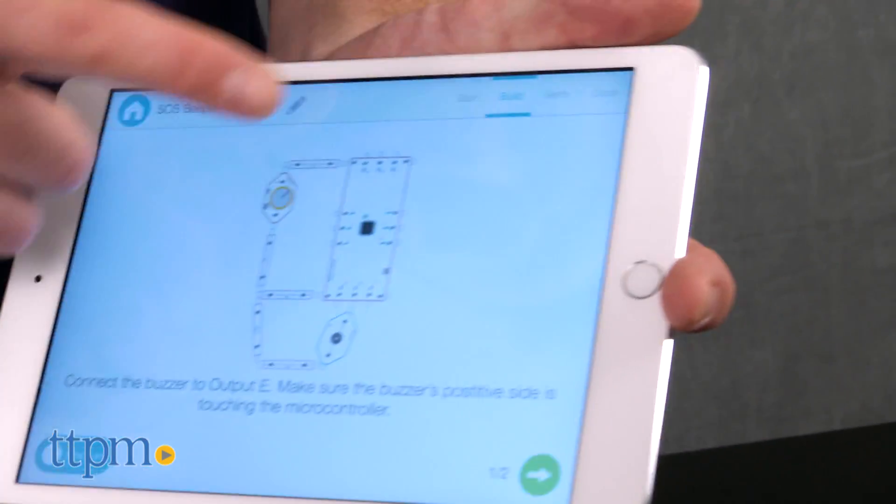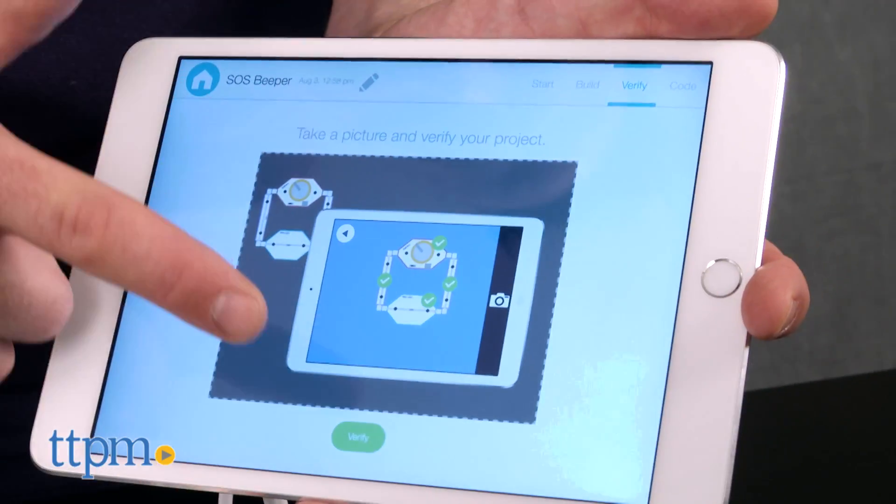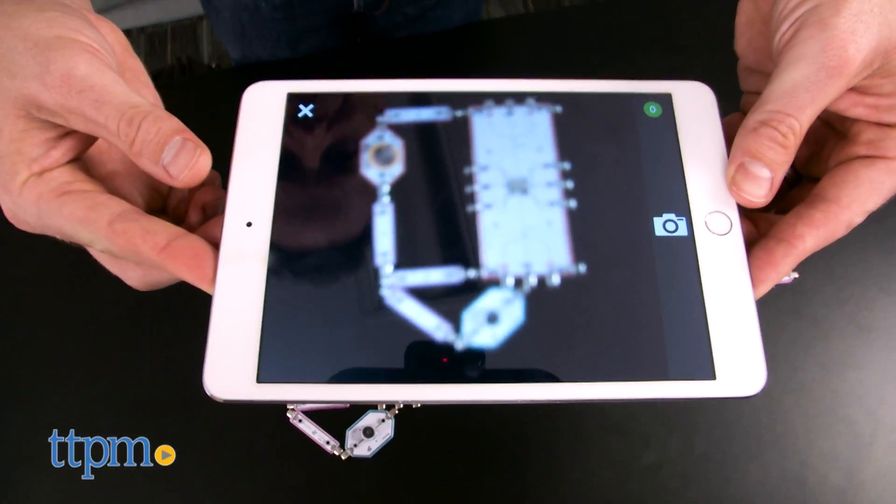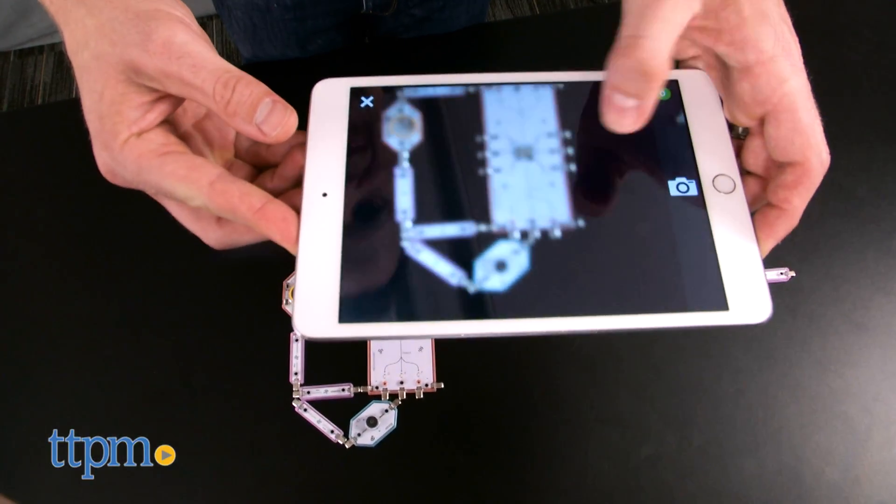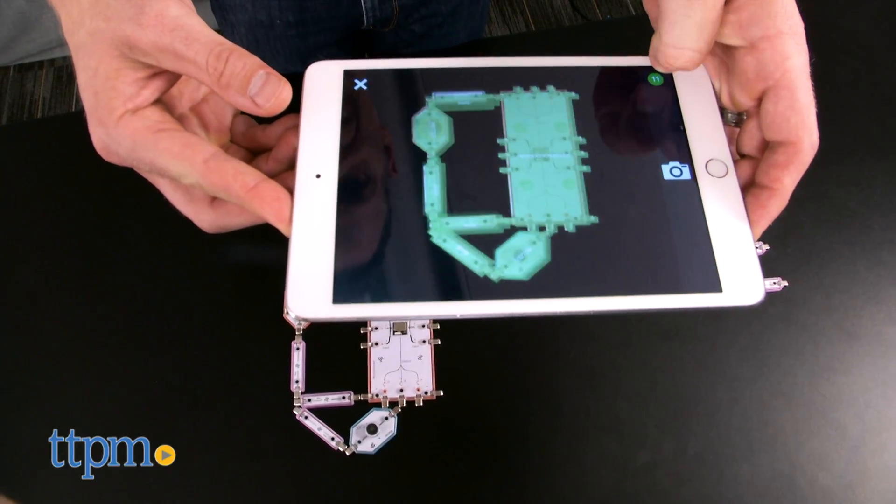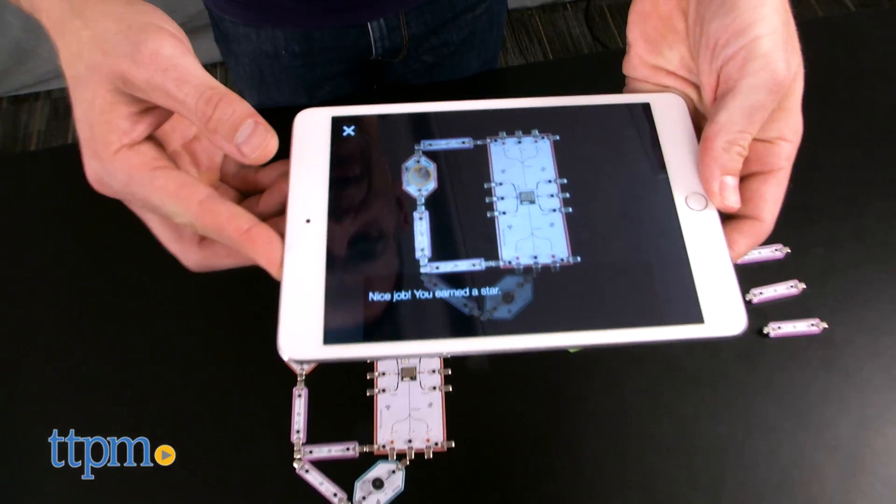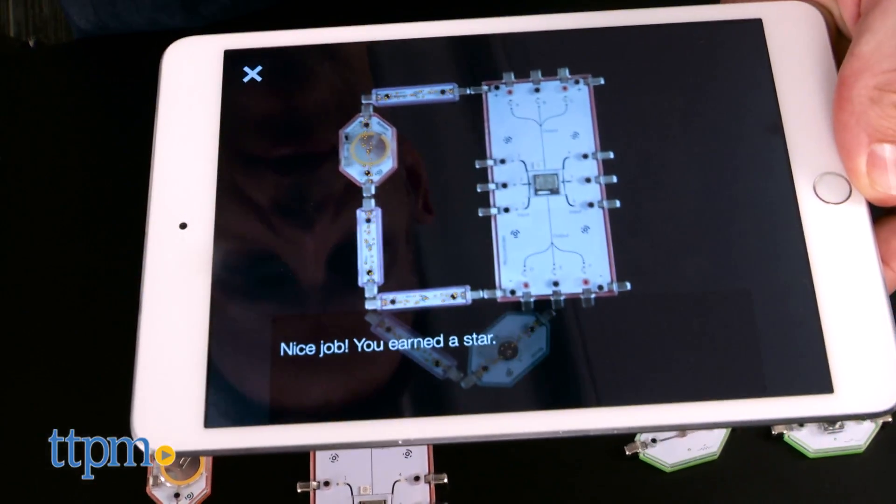You'll start off by following the in-app instructions and use other pieces to assemble things like a simple buzzer, using the power supply, microcontroller, buzzer, momentary switch, and a few wires. Hover your iPad over the assembly to see how the electricity flows and to be sure you've got it right. Then use the switch to fire the buzzer.